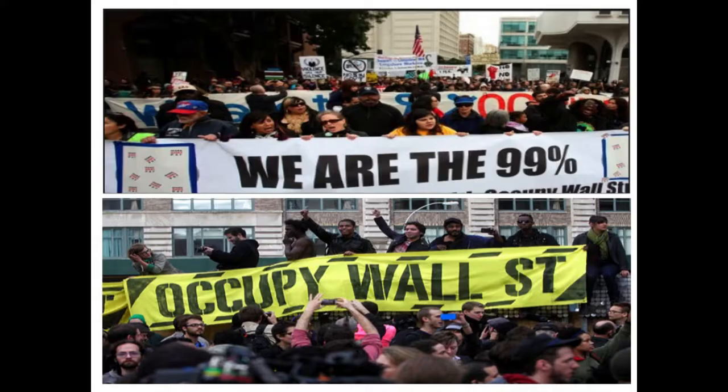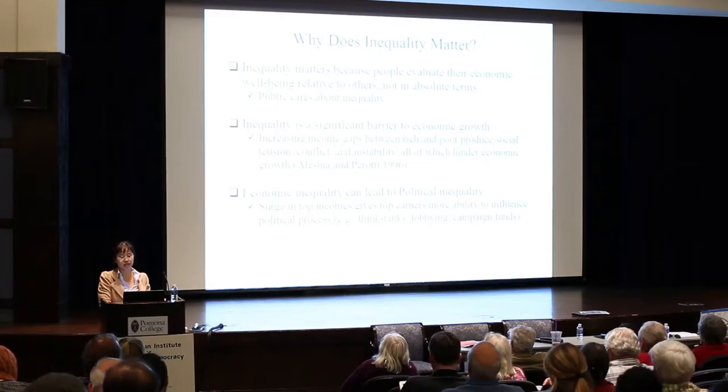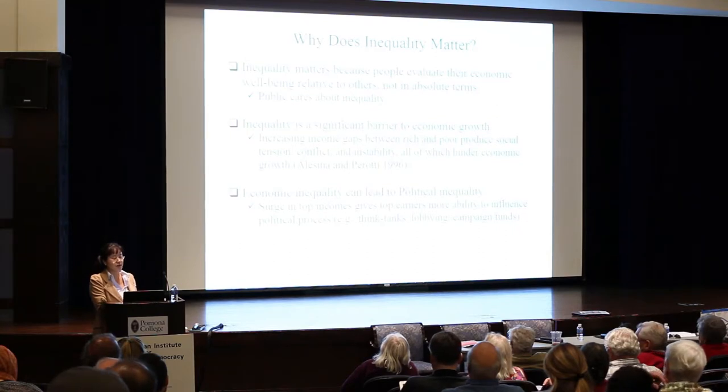We observed this social conflict back in 2011. The Occupy Wall Street movement is one example — they argued that they are the 99% and were against the top 1%. Another problem is that economic inequality can lead to political inequality. Surging top incomes give top earners more ability to influence the political process, through think tanks, lobbying, and campaign funds.